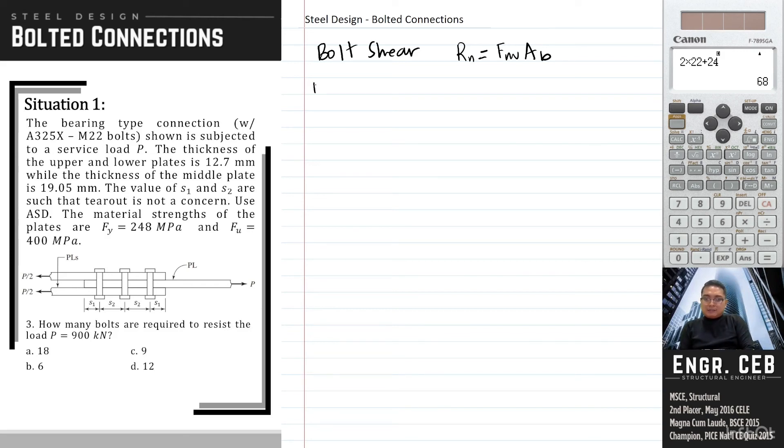First, we analyze the upper plate. Considering upper plate, we will compute for the governing strength of the bolt. In the previous problem, we figured out the value of S1 and S2 such that tear out will not govern. So we will now only consider bearing deformation and bolt shear.